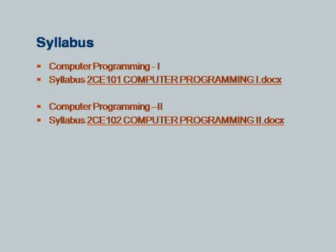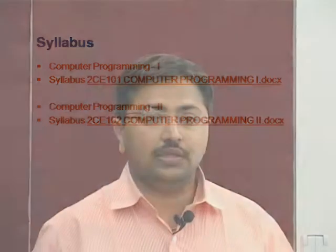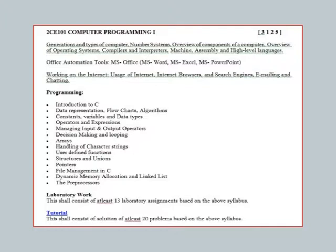The syllabus I am covering is for the part of the computer programming subject taught by the Nirma UCD department — specifically Nirma Institute of Technology, under which all engineering branches fall. The course code assigned is 2C101. The teaching scheme for Computer Programming One includes three lectures per week, one tutorial, and two hours for lab, with a total credit of five. The whole class is divided into three batches for tutorial sessions.